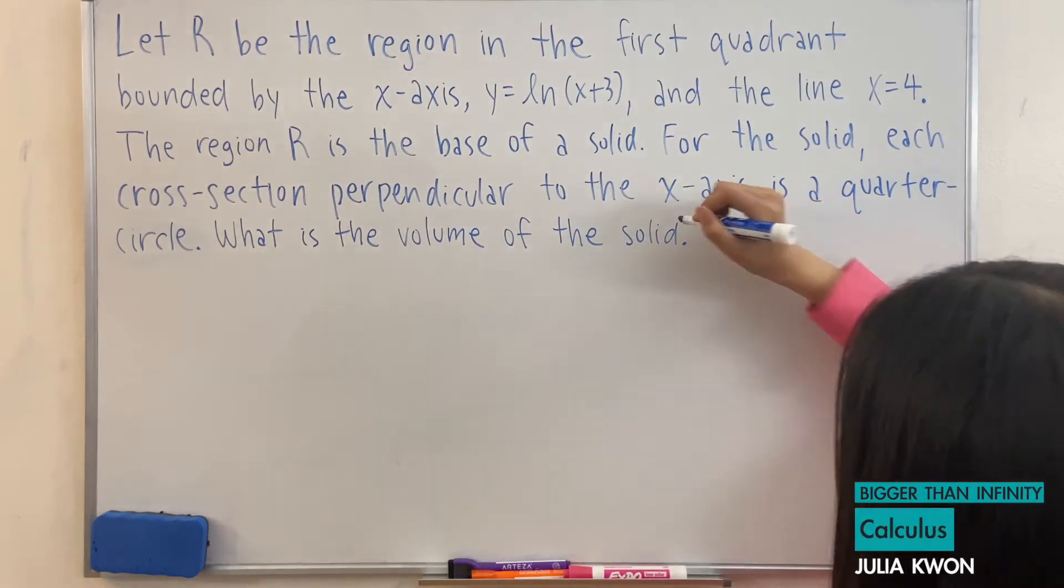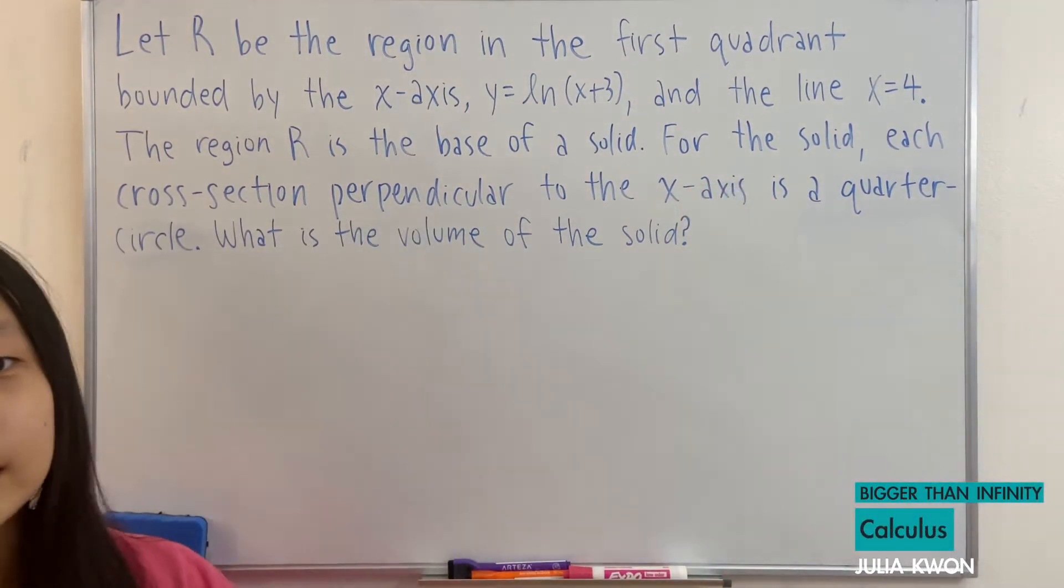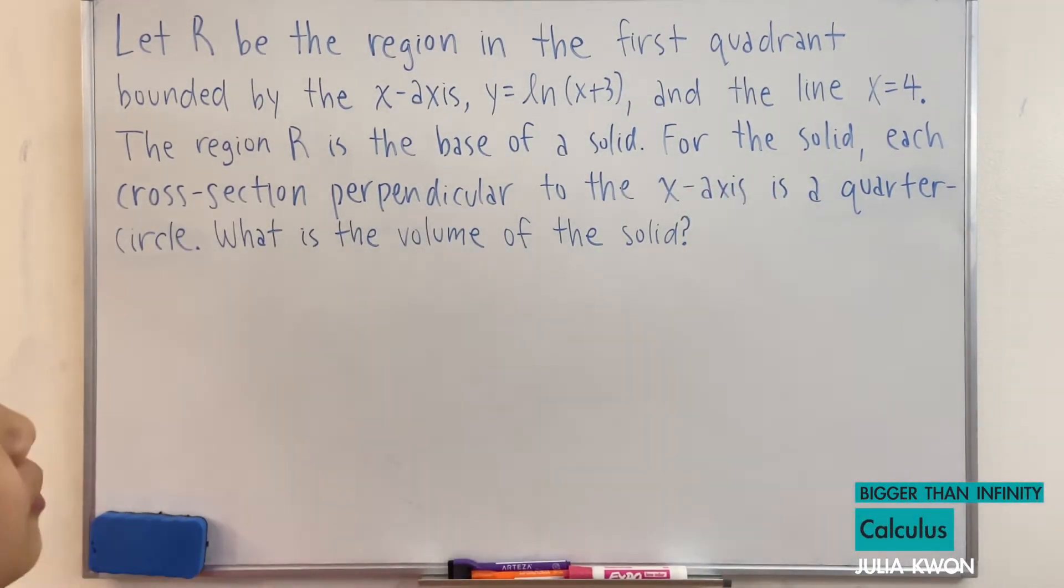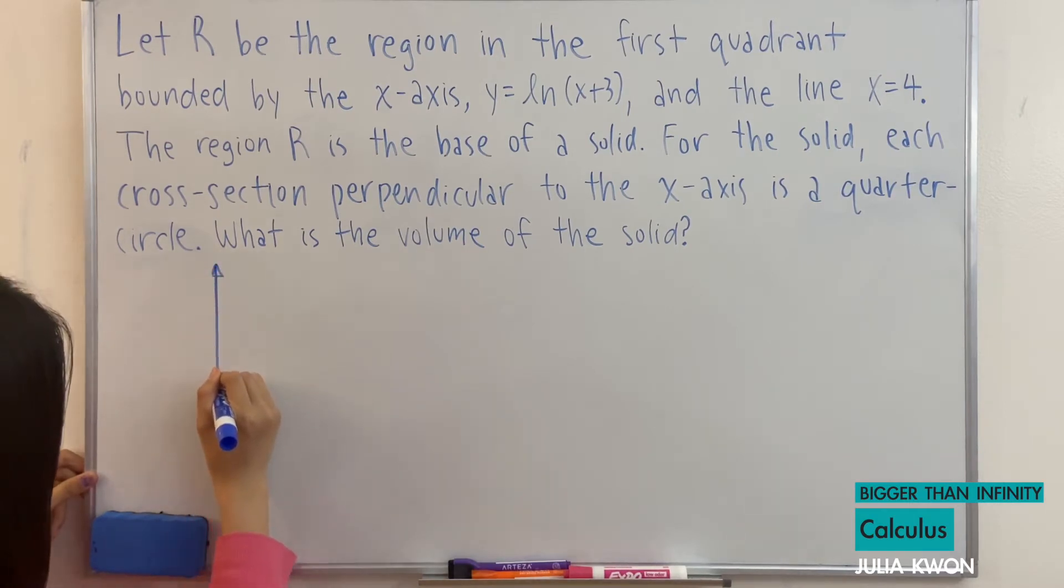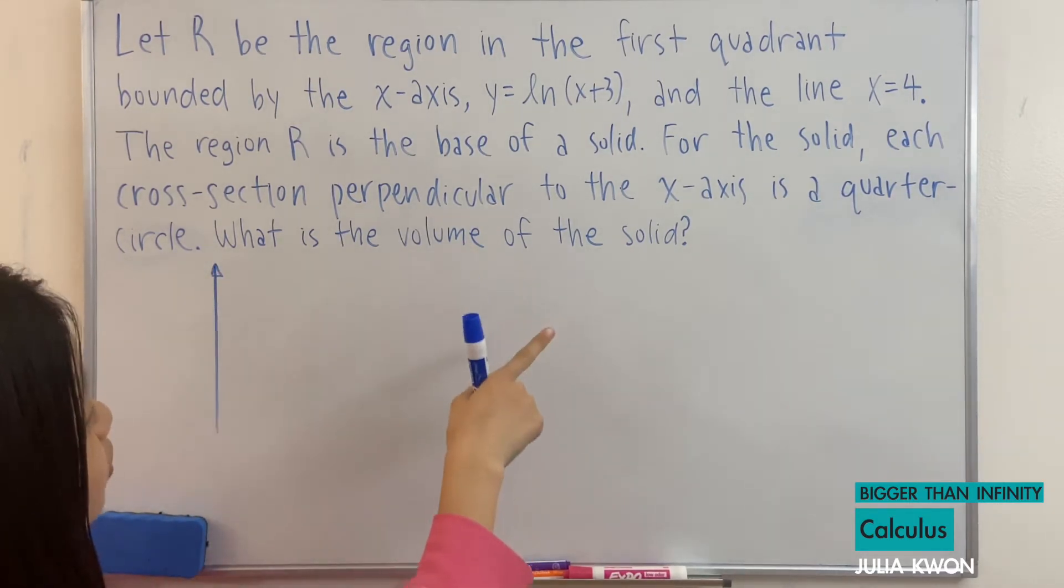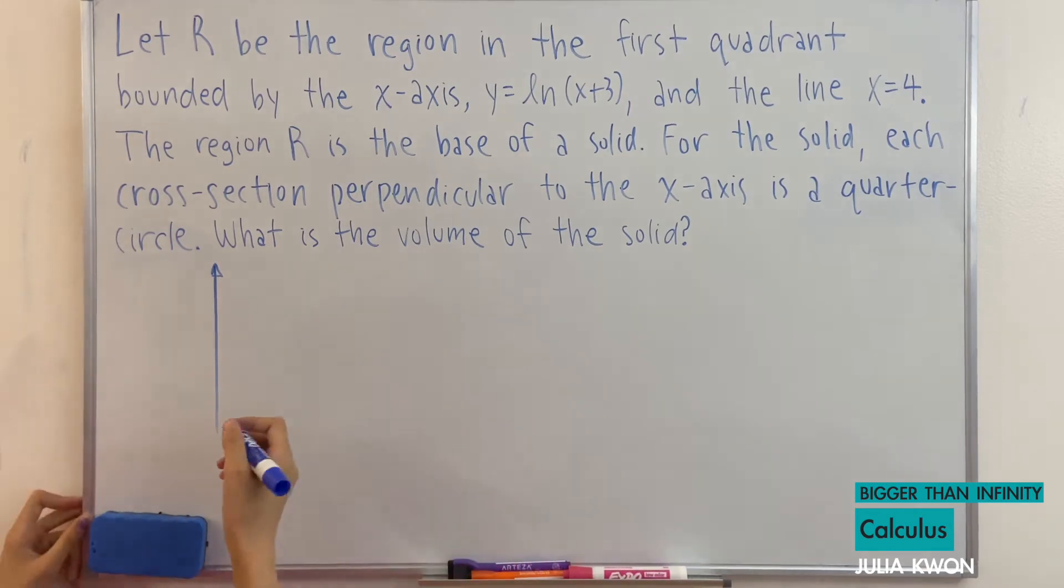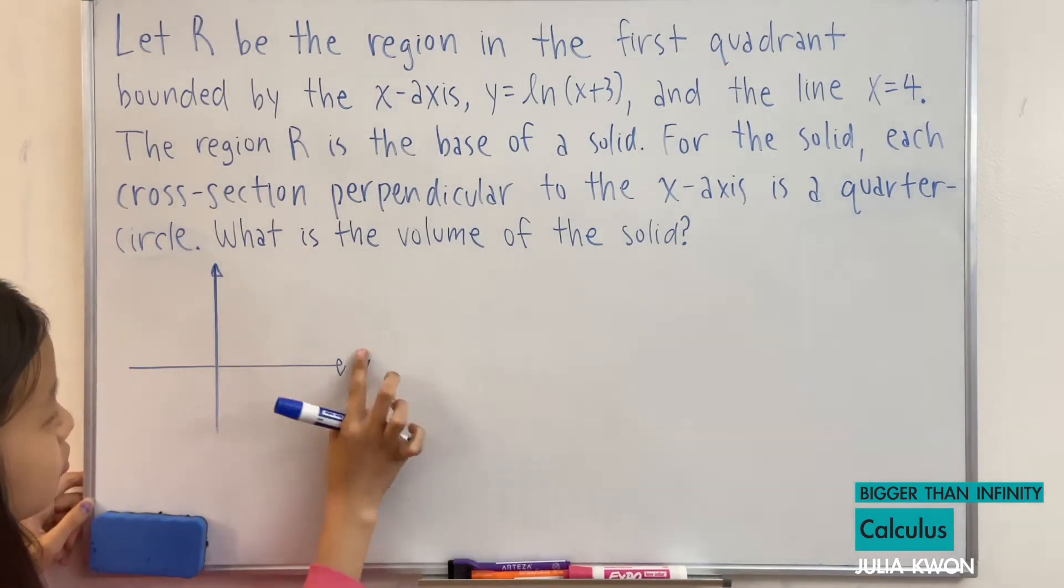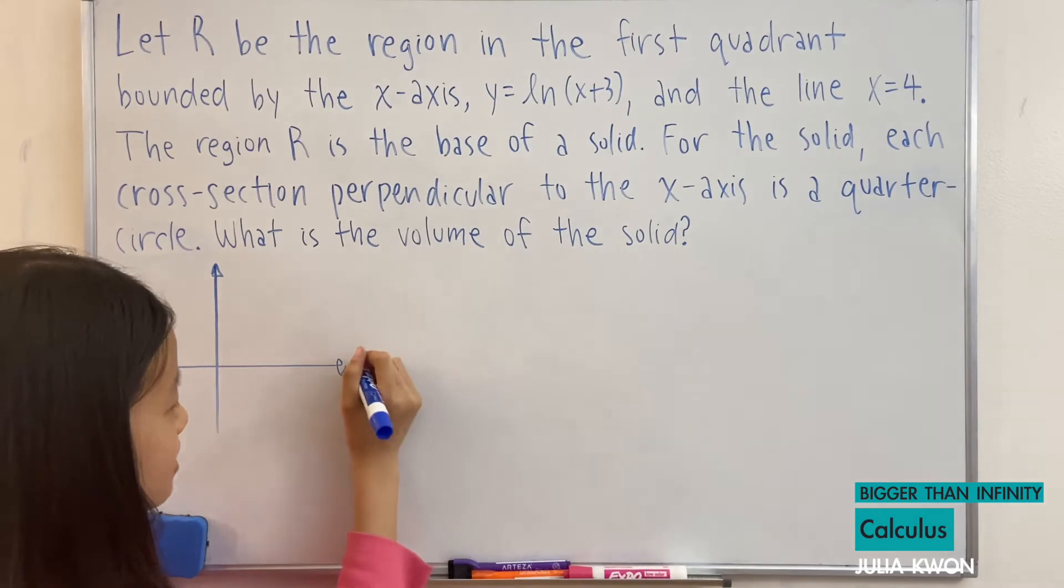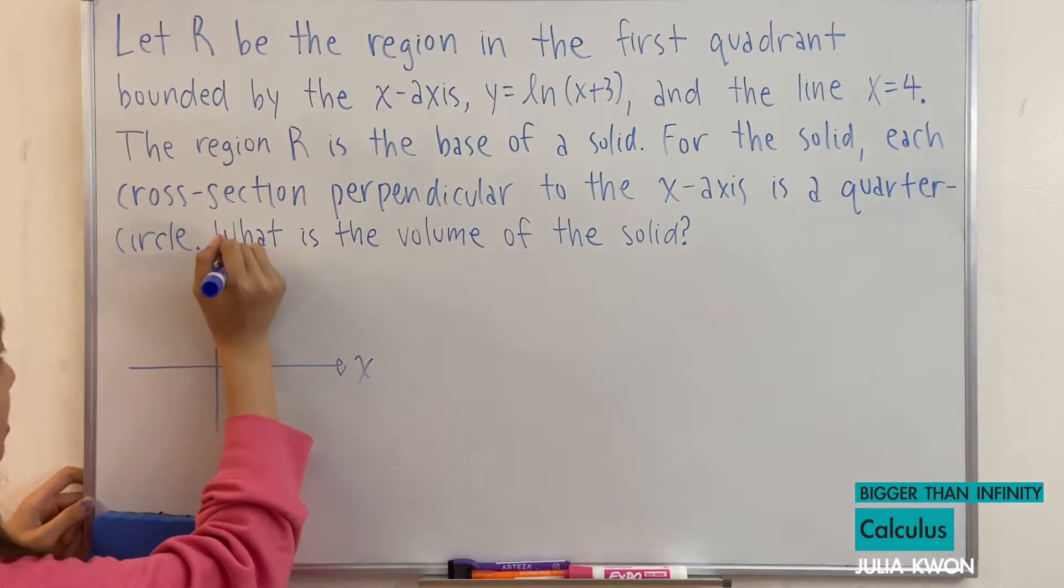And that's actually supposed to be a question mark. Okay, so the first thing we want to do is draw out what this problem would look like. When we have a volume problem with cross-sections, we normally want to also draw it in 3D. First let's draw it in 2D. So this is the x-axis and this is the y-axis.